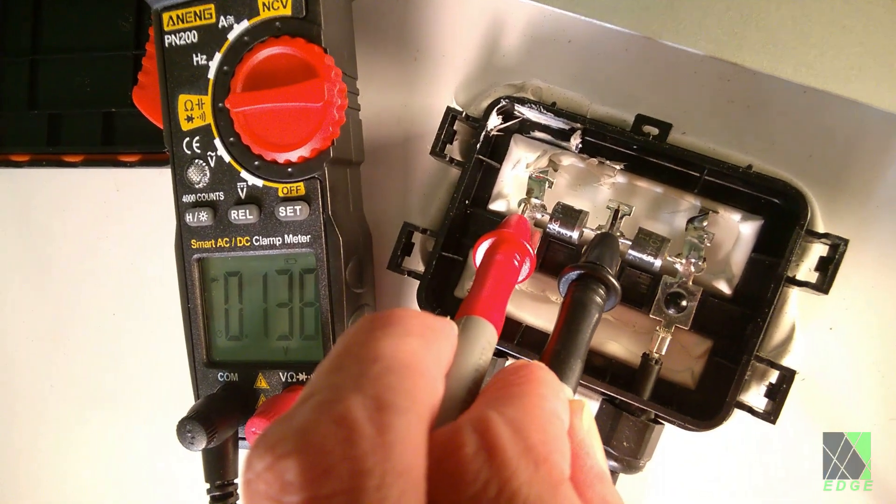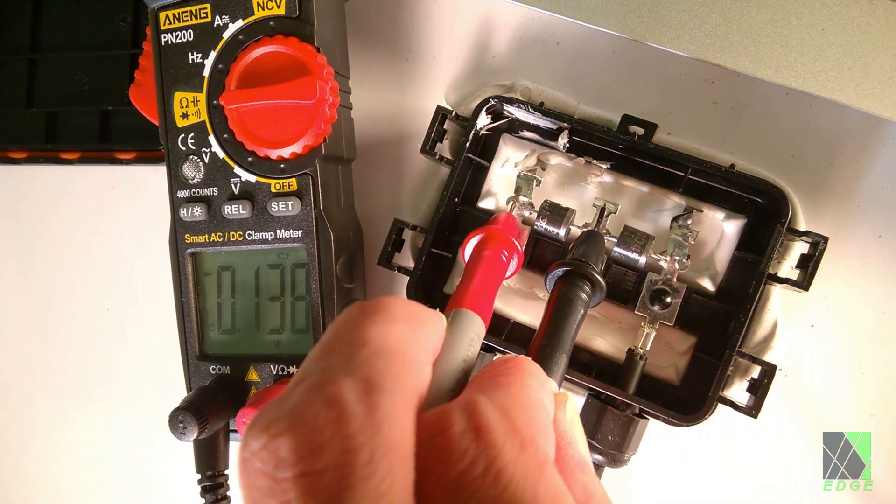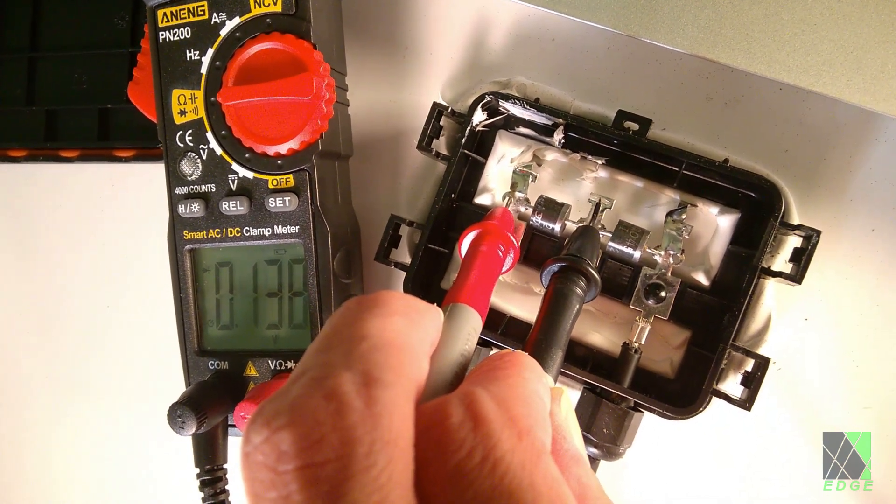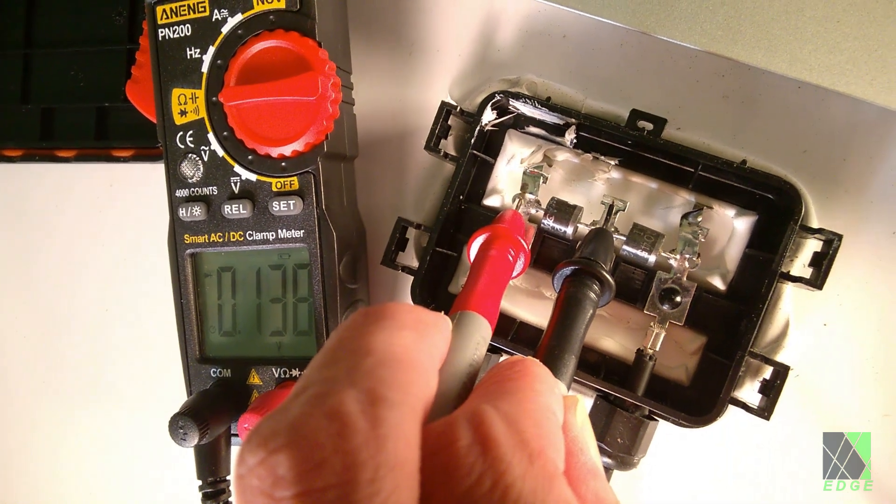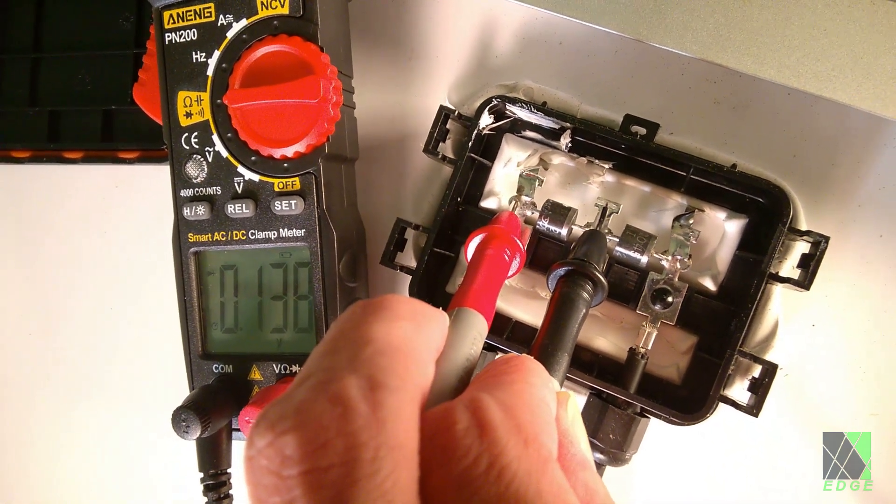You can use diode check mode to check the bypass diodes that are located inside larger solar panels. Look closely at the orientation of the red probe and you will see that this Schottky diode is testing good.